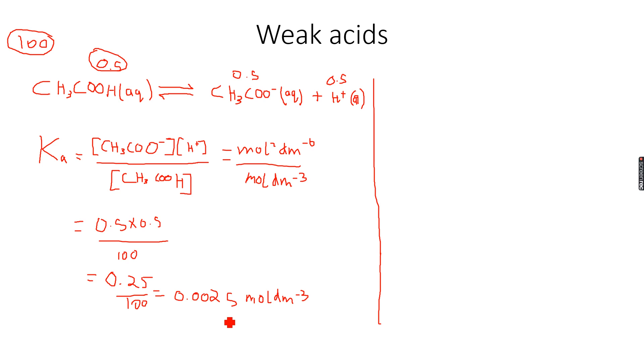In solution, to find basically why weak acids have a high pH relative to strong acids, it's because they undergo reversible reactions. They do not completely dissociate, they partially dissociate. So we can calculate the acid dissociation constant.